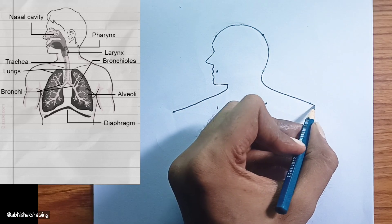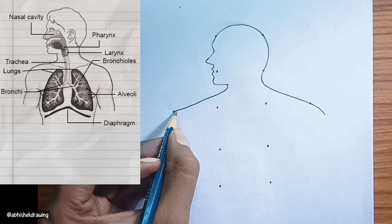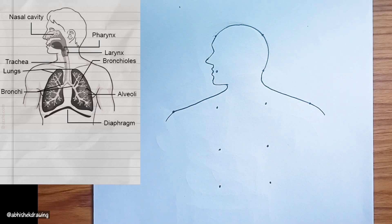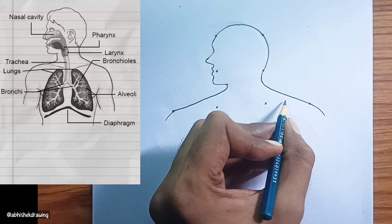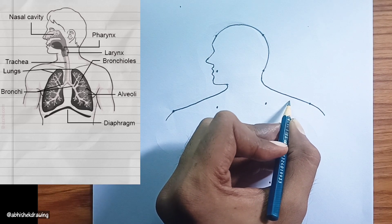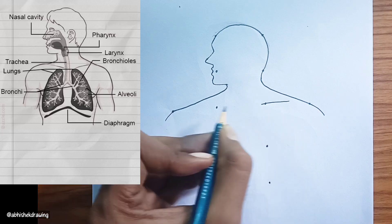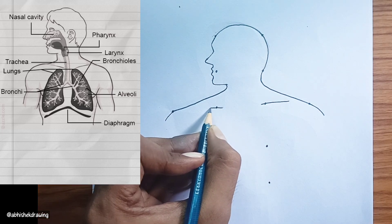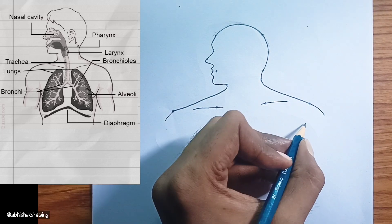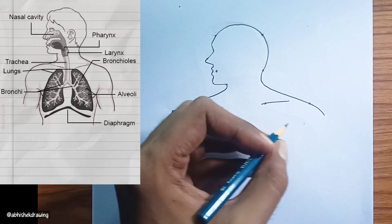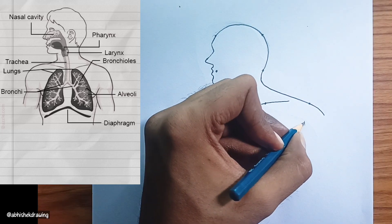Bronchi. The trachea divides into two main bronchi — plural of bronchus — one leading to each lung. These tubes continue to branch into smaller and smaller passages within the lungs.